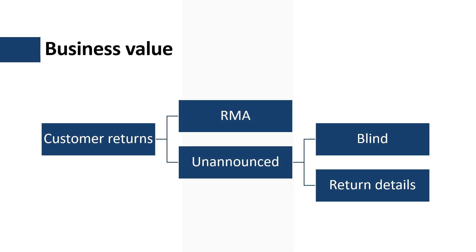Looking at the sales return process in Dynamics 365 Supply Chain Management, this process is usually initiated by creating a return material authorization, also known as an RMA order. However, in some business scenarios customers might request to return products without providing advanced notification. This kind of return is called an unannounced sales return.